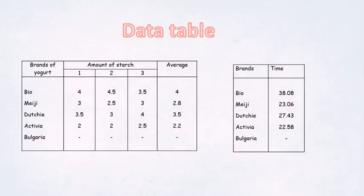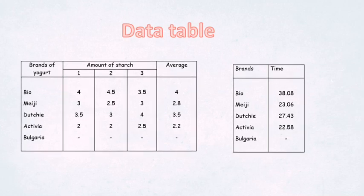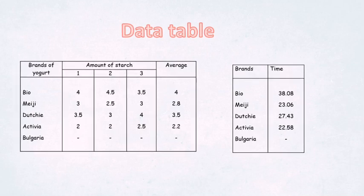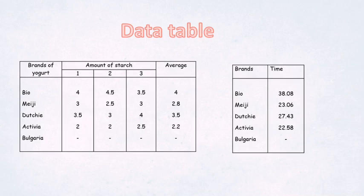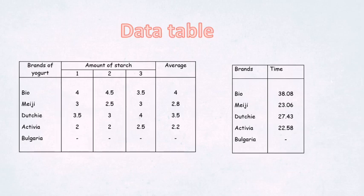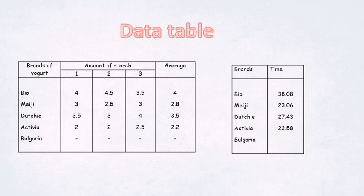Data table: It shows five brands of yogurt — Bio, Meiji, Dachi, Activia, and Bulgaria. Bio: first time has starch 4 grams, second 4.5 grams, third 3.5 grams. Meiji: first time has starch 3 grams, second 2.5 grams, third 3 grams.